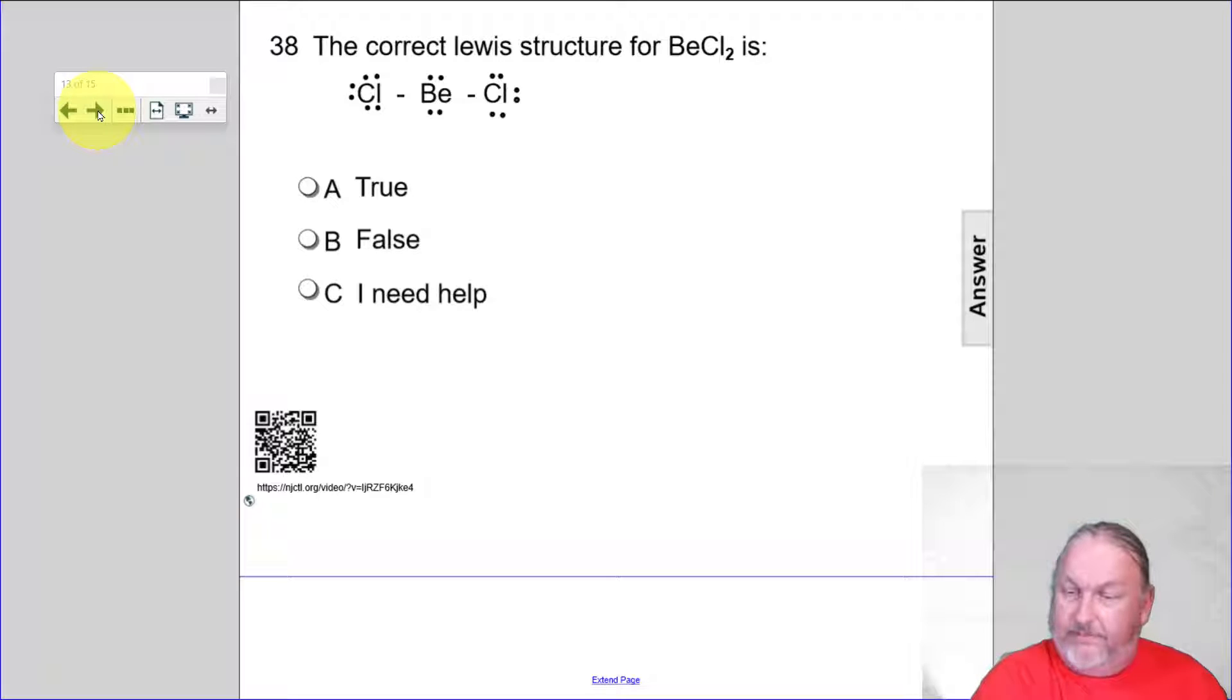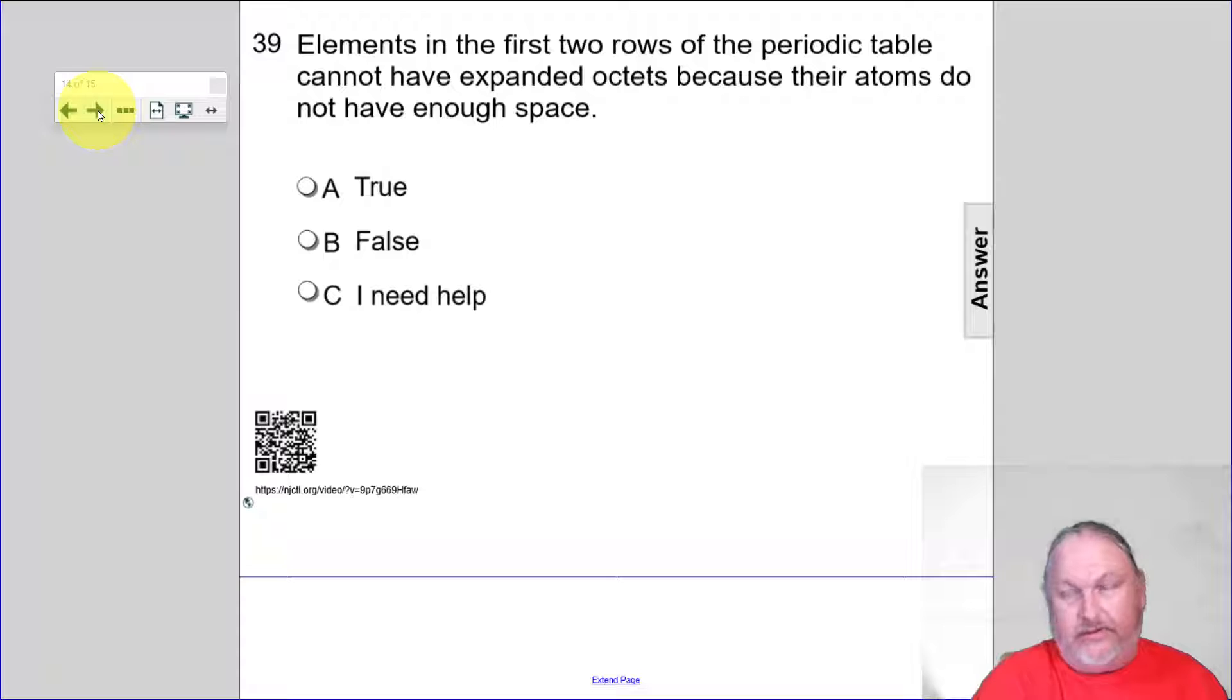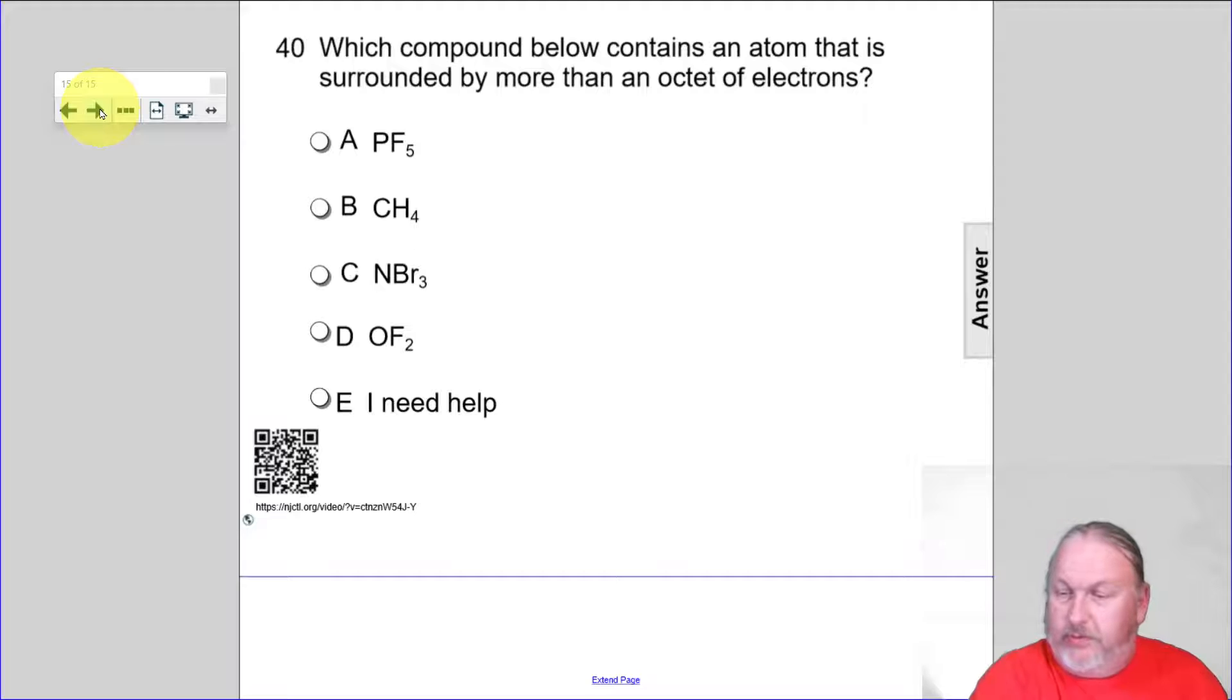We'll look at beryllium chloride. Why is that the correct Lewis structure for beryllium chloride? No, it's actually false. It doesn't need the two pairs. That would actually be a true statement right there. The elements in the first two rows can't have expanded octets because they don't have the d orbitals to expand into. And that's really what we're doing.